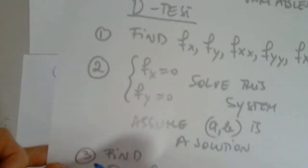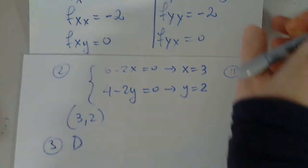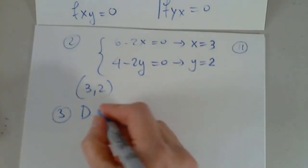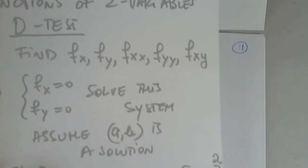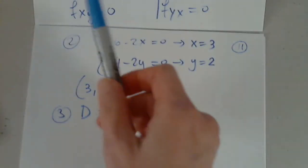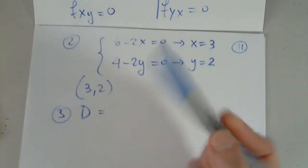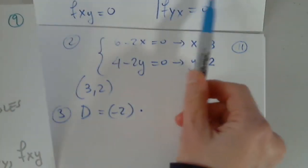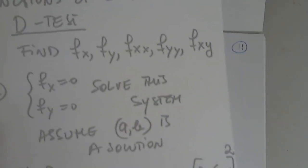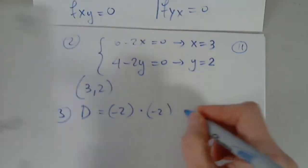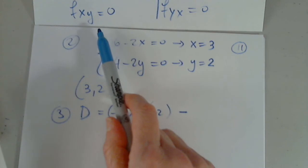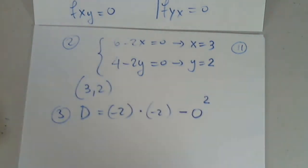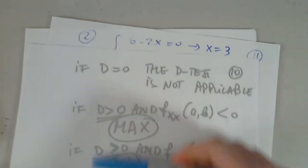I got this ordered pair as the solution. And now, in step 3, I have to find d. Calculate this number for the d test. So the d test says that I have to evaluate fxx at a,b. But fxx is negative 2. I can't plug in anything. So this is just negative 2. Multiply it by fyy evaluated at a,b. But fyy is also negative 2. That's fine. So I have this product, negative 2 times negative 2. Now minus fxy evaluated at a,b. But that's 0. And squared doesn't make any difference. So this number is 4. Negative 2 times negative 2 is 4. 4 minus 0 is 4. So I'm back to analyzing the situation.